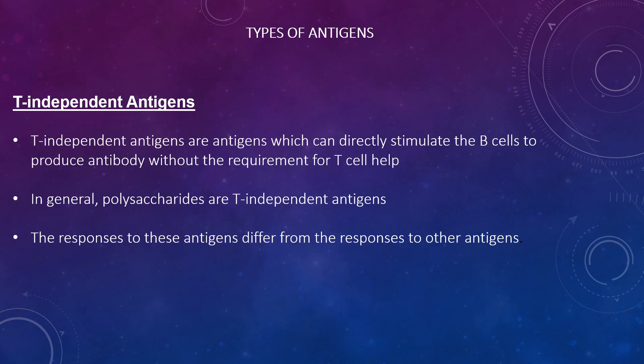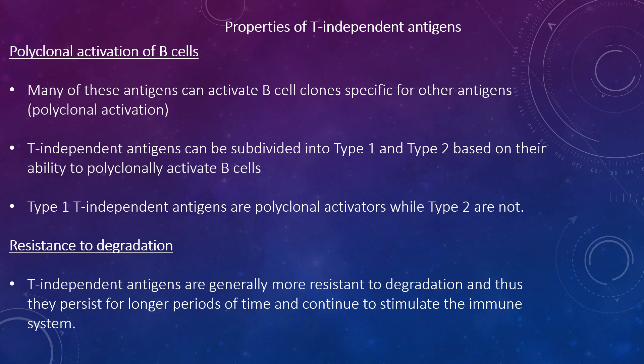T-independent antigens are antigens which can directly stimulate B-cells to produce antibodies without requiring T-cell help. In general, polysaccharides are T-independent antigens. The responses to these antigens differ from responses to other antigens. A key property is polyclonal activation of B-cells — many of these antigens can activate B-cell clones which are specific for other antigens.